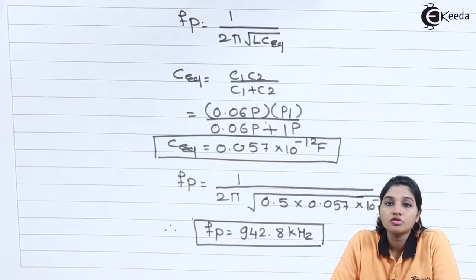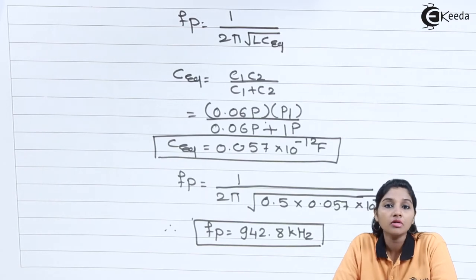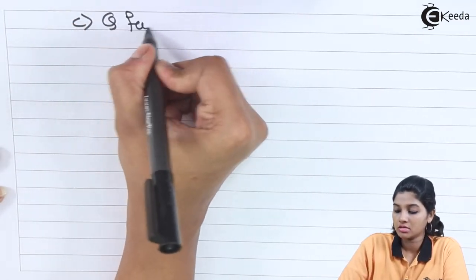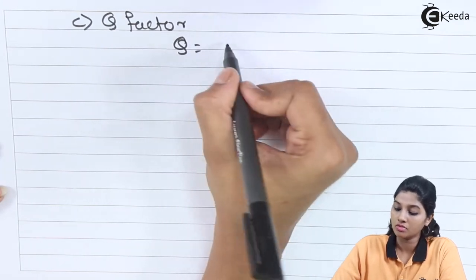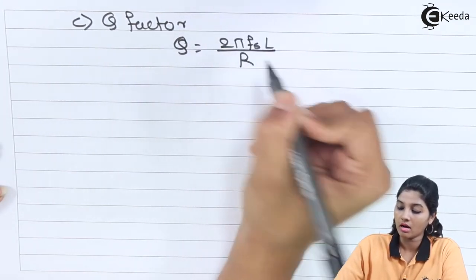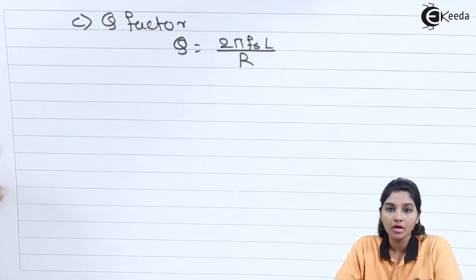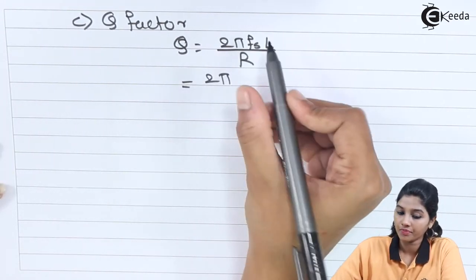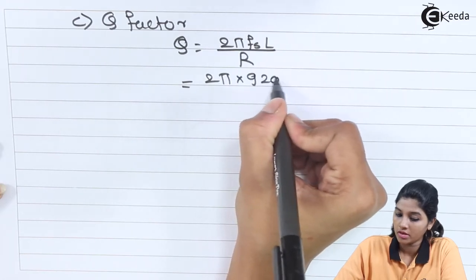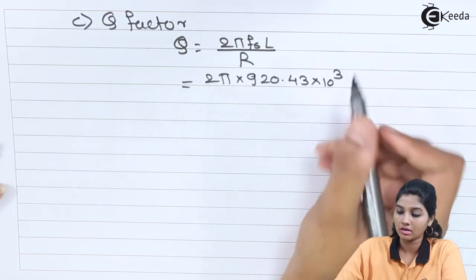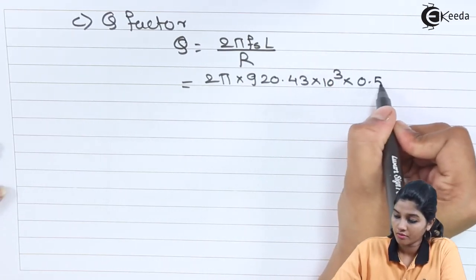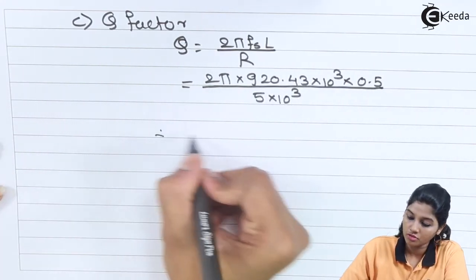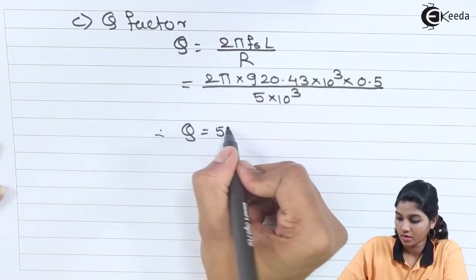Now the next thing is to find the value of quality factor, which depends upon the series resonant frequency Fs. Q factor equals 2π·Fs·L divided by R. Substituting: 2π into 920.43 × 10³ into 0.5 Henry divided by 5 × 10³ ohms. We get Q factor equals 577.